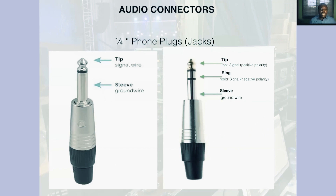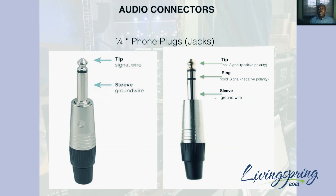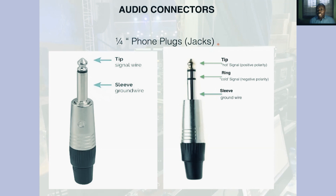If you look at a phone jack, the black portion is called the ring — it separates the terminals from one another. In this case you have the tip and then the sleeve. The tip usually carries the signal wire, and the sleeve carries the ground wire. The ones that have two rings are most commonly known as stereo jack plugs, or TRS jack plugs — T for tip, R for ring, S for sleeve. TRS jack plugs are commonly used for balanced signals because they can carry two signals, which I will explain in the next few panels.